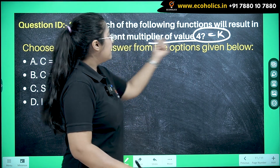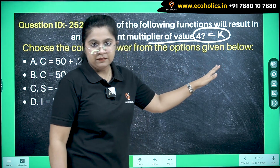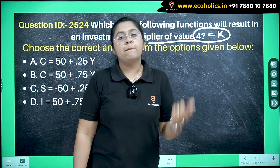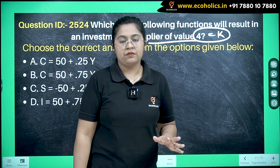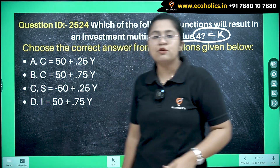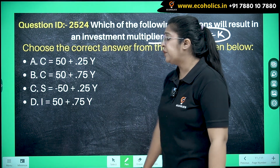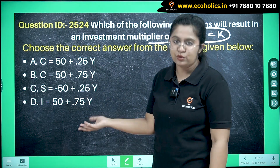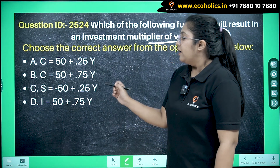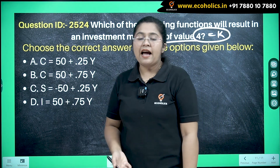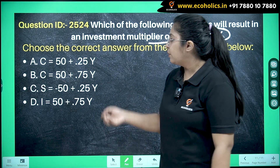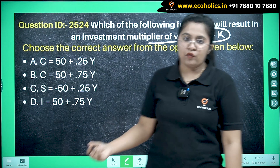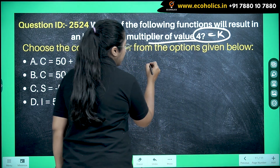The most prominent thing we use in the multiplier concept is marginal propensity to consume. The options include consumption functions, saving functions, and investment functions. Consumption and saving functions have a direct relationship with income, and they can be written as follows.